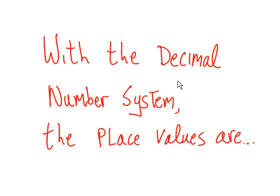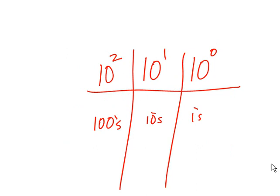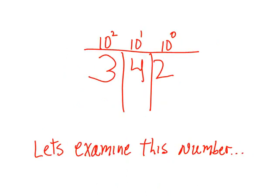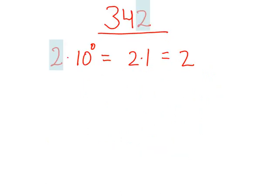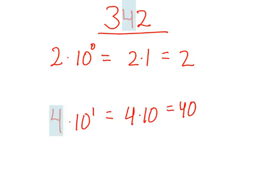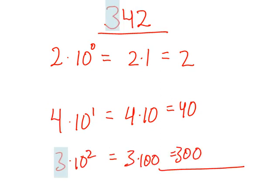With the decimal number system, the place values are 10 to the 0, 10 to the 1, 10 to the 2, which is 1's, 10's, and 100's respectively. Let's examine the number 342. 2 times 10 to the 0 equals 2 times 1 equals 2. 4 times 10 to the 1 equals 4 times 10 equals 40. 3 times 10 to the 2 power equals 3 times 100 equals 300. Add them up, we get 342.